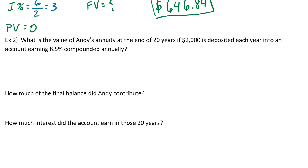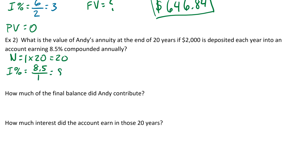For example two: what is the value of Andy's annuity at the end of 20 years if $2,000 is deposited each year into an account earning 8.5% compounded annually? For big N: compounded annually means once per year, times 20 years, so N = 20. For i%: 8.5%, entered as just 8.5, divided by one compounding per year, so i% = 8.5.